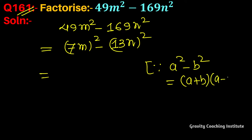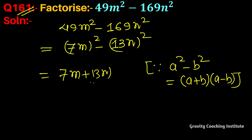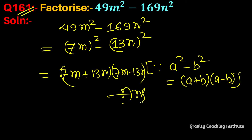So it will be (7m + 13n)(7m - 13n), which is the required answer.